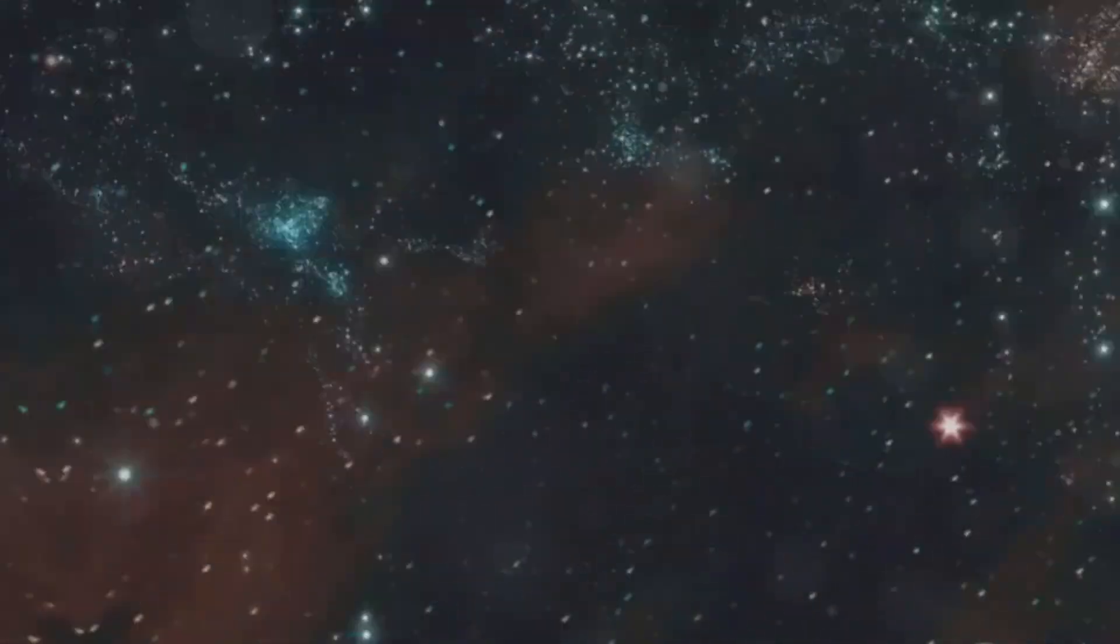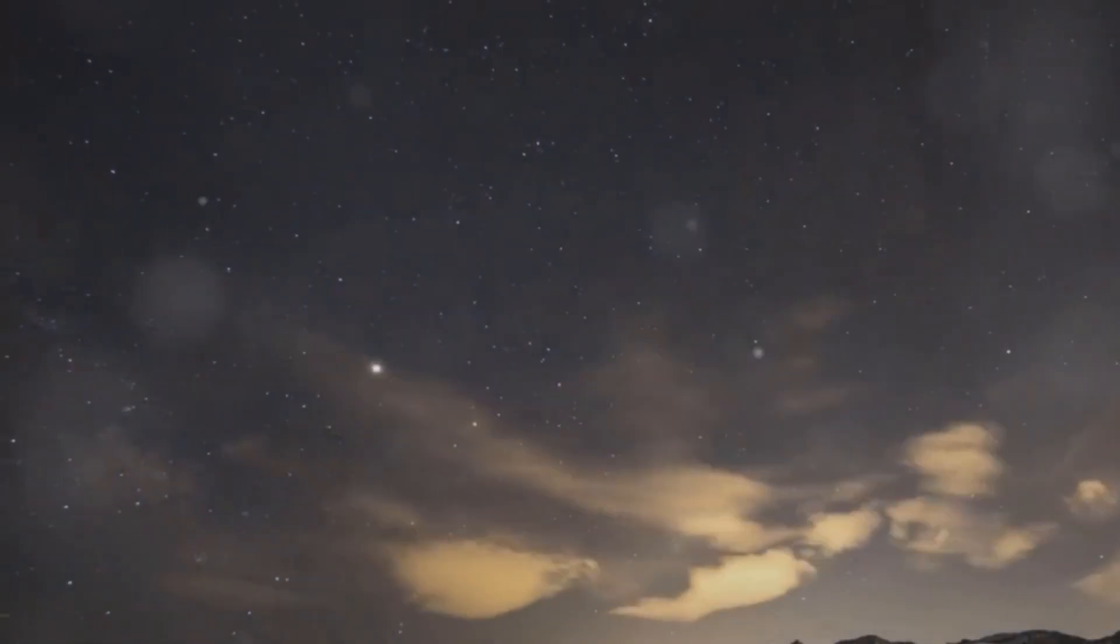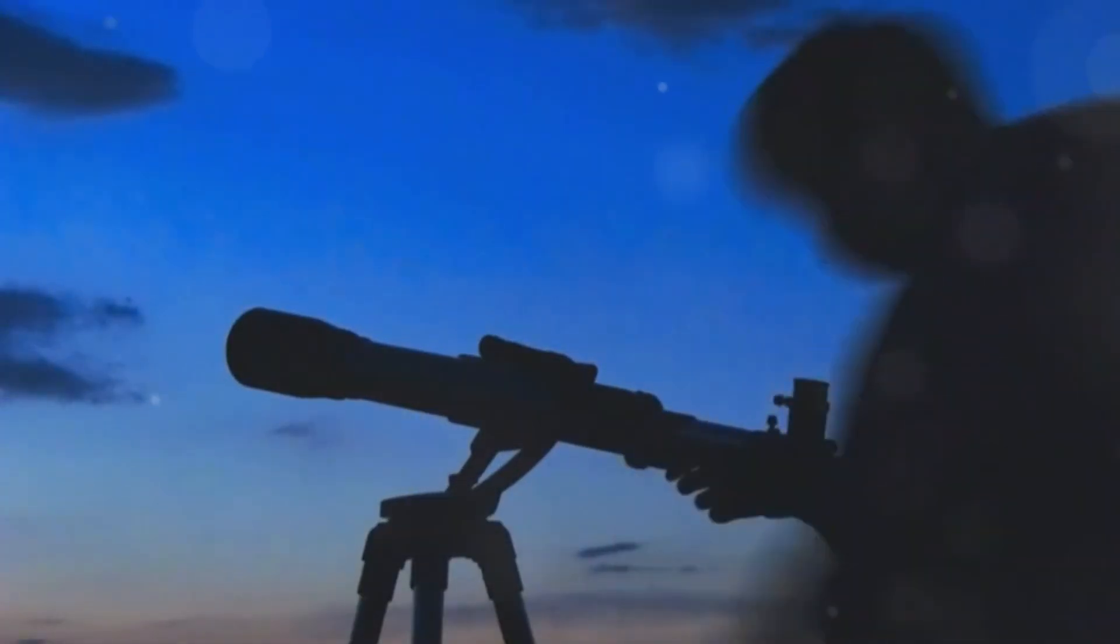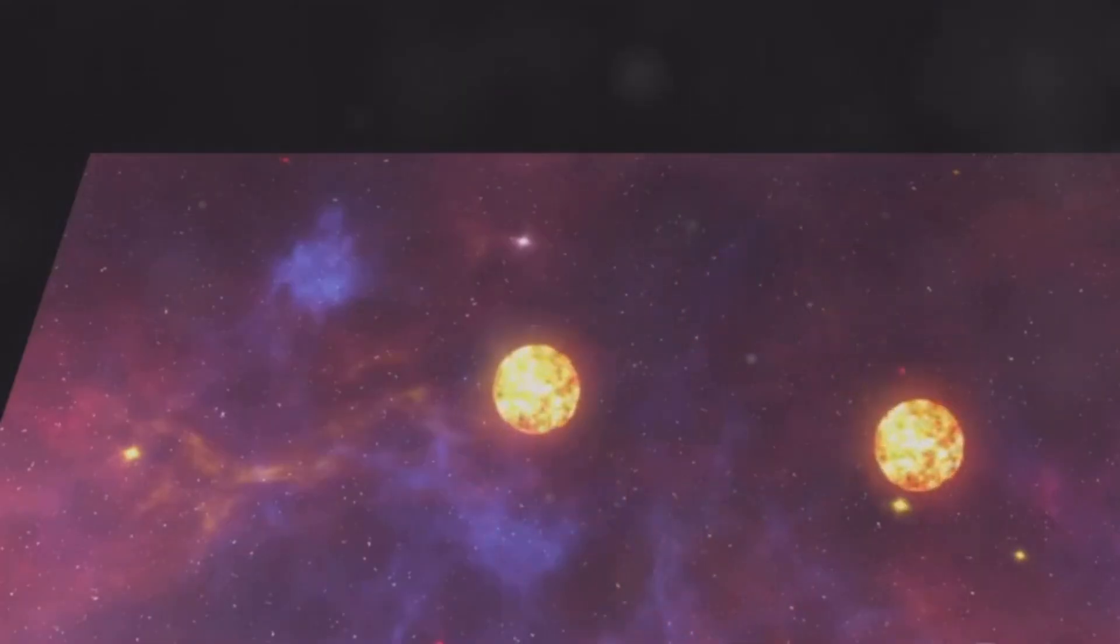CX-330 is not just unusual because of its location. It also behaves in strange ways. Astronomers classify it as a FU Orionis object. This type of star is incredibly rare. Only a handful are known to exist.